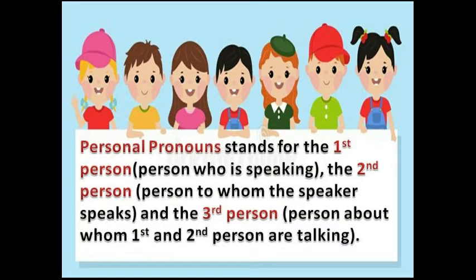Personal pronouns stand for the first person — the person who is speaking; the second person — the person to whom the speaker speaks; and the third person — the person about whom the first and second person are talking. Who are the first person? The person who is speaking. Who are the second person? The person to whom the speaker speaks. And the third person are the persons about whom the first and second person are talking.